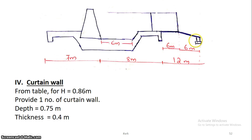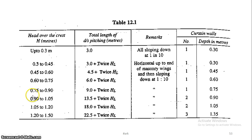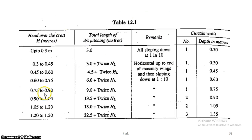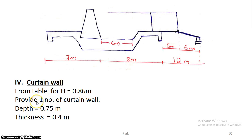Next, the curtain wall. From Table 12.1, with h value of 0.86 falling between 0.75 and 0.9, we get the curtain wall details: provide 1 number of curtain wall with a depth of 0.75 meters and a thickness of 0.4 meters.